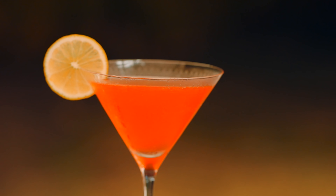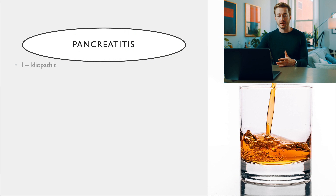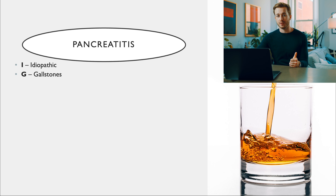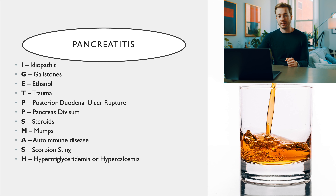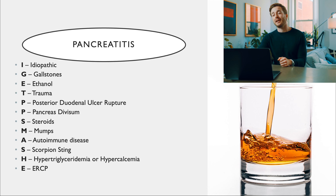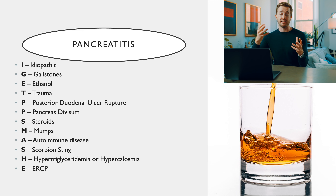One of my favorites is I GET PP SMASHED — different causes of pancreatitis. I is idiopathic, G is gallstones (the second most common cause), E is ethanol (the most common cause). Then you have P for steroids, P for mumps, S for autoimmune disease, M for scorpion sting, A for hypertriglyceridemia or hypercalcemia, S for ERCP (endoscopic retrograde cholangiopancreatography — basically a tube to view your biliary ducts), and D is drugs.